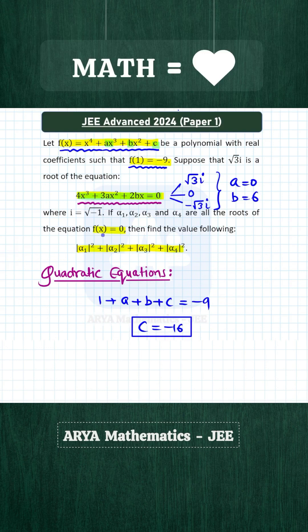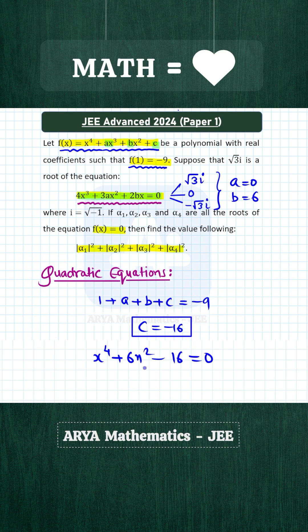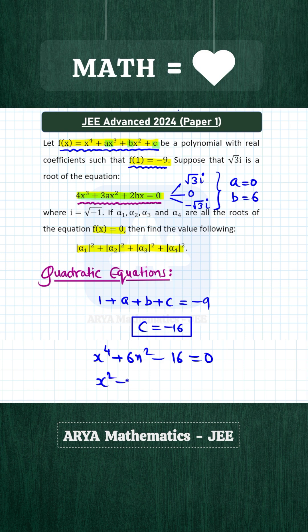Now once a, b, and c are known, the equation f(x) = 0 will be x⁴ + 6x² - 16 = 0. This is a quadratic equation in x². By splitting the middle term, we will get factors as (x² - 2)(x² + 8) = 0.